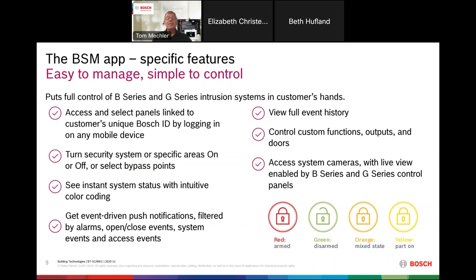The system status is viewable at a glance. You can see those circles on the right-hand side of this slide — red for armed, green for disarmed, orange where some areas are armed and some are not, and yellow for partially on, such as when they've armed just the perimeter. All of that is really easy to use and easy to see.